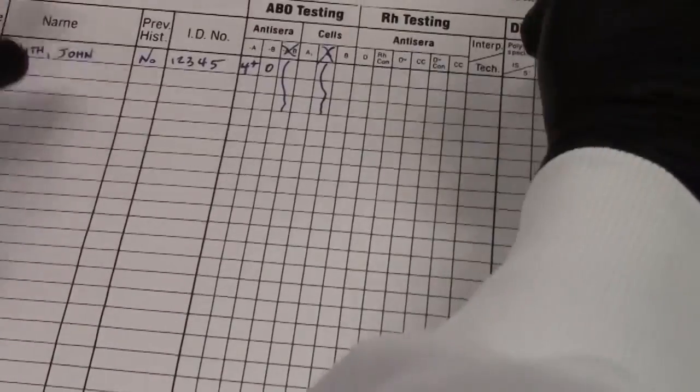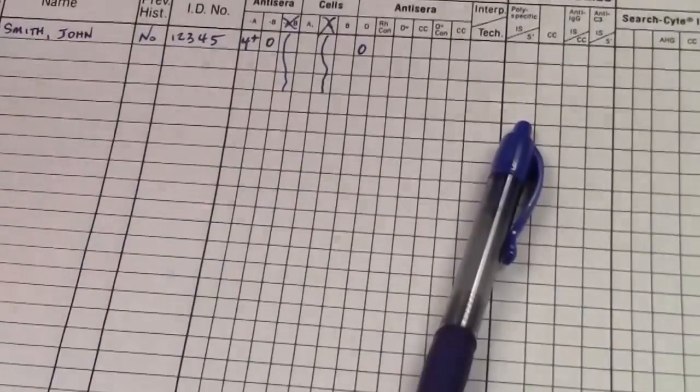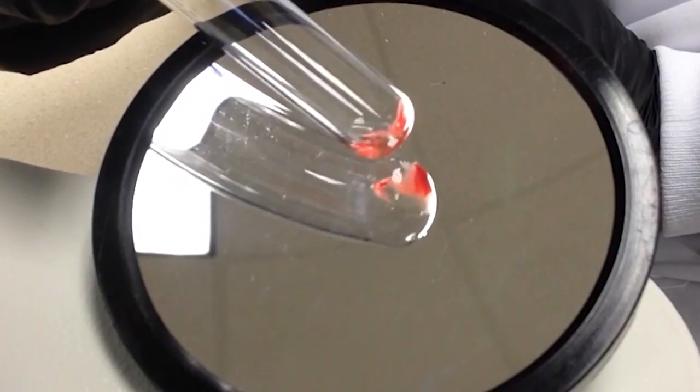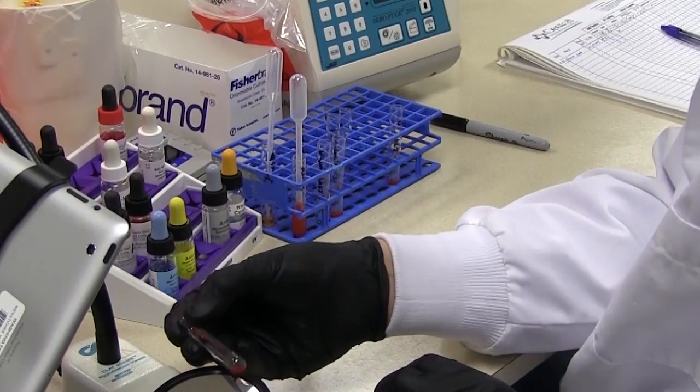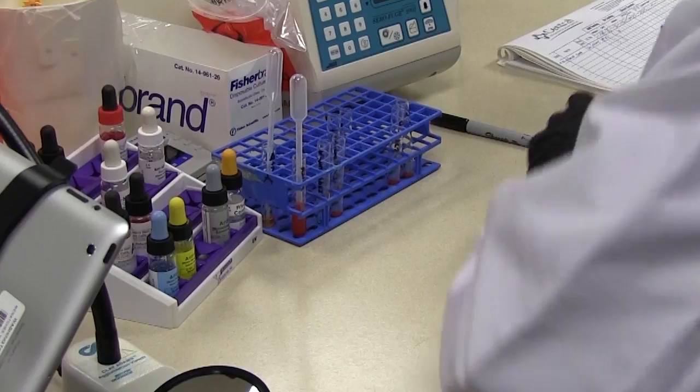Okay our D, once again I don't see any kind of aggregation it looks like a smooth cell suspension. So over here under D we'll record that as zero or negative. Okay let's go ahead and do our control. Okay again smooth suspension so that's negative for the control.